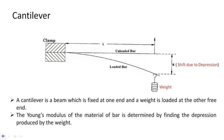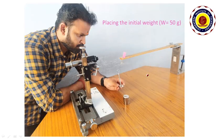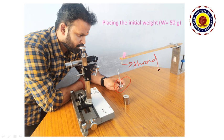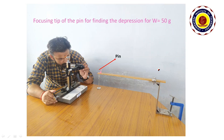This picture shows how to place the initial weight W equal to 50 grams on the thread which is found below the cantilever. After placing the initial weight W equal to 50 grams below the thread at one end of the cantilever, you have to focus the pin which is found on one end of the bar.